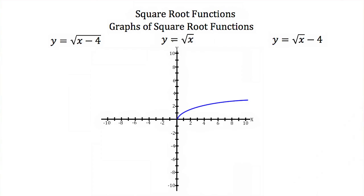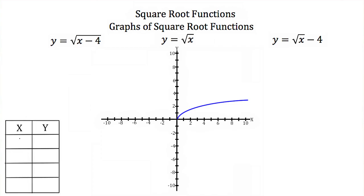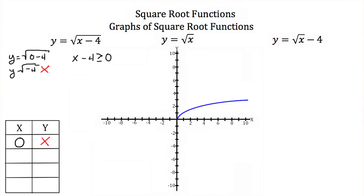Now let's compare the graph of y equals the square root of x to y equals the square root of x minus 4, and y equals the square root of x minus 4. We'll do y equals the square root of x minus 4 first. The domain requires x minus 4 to be greater than or equal to 0, since we can't take the square root of a negative number — so x has to be greater than or equal to 4.